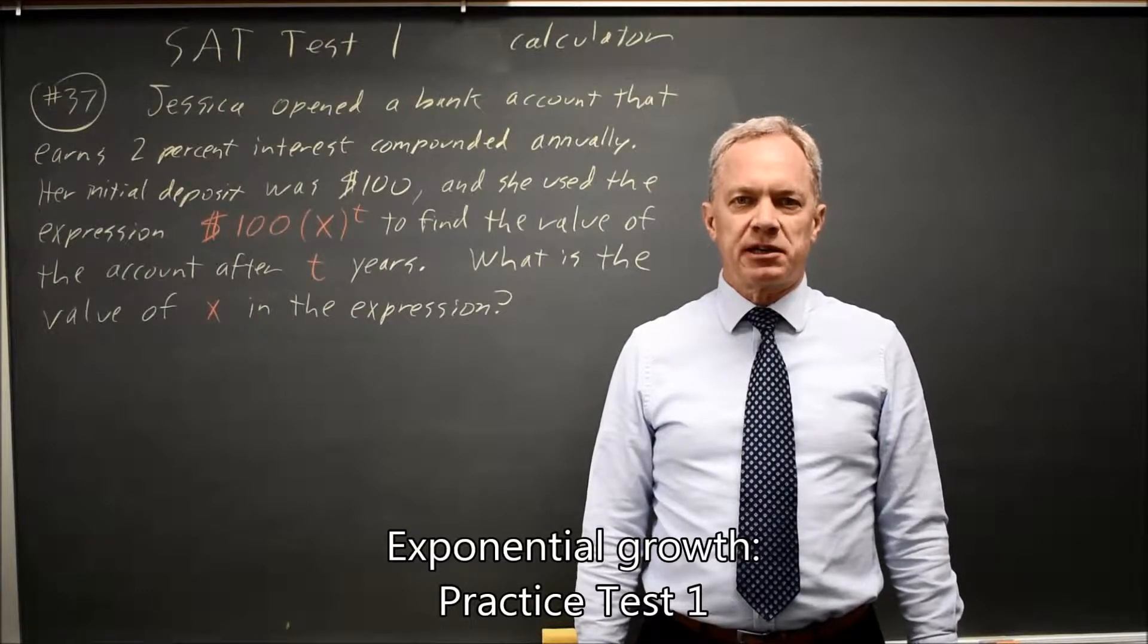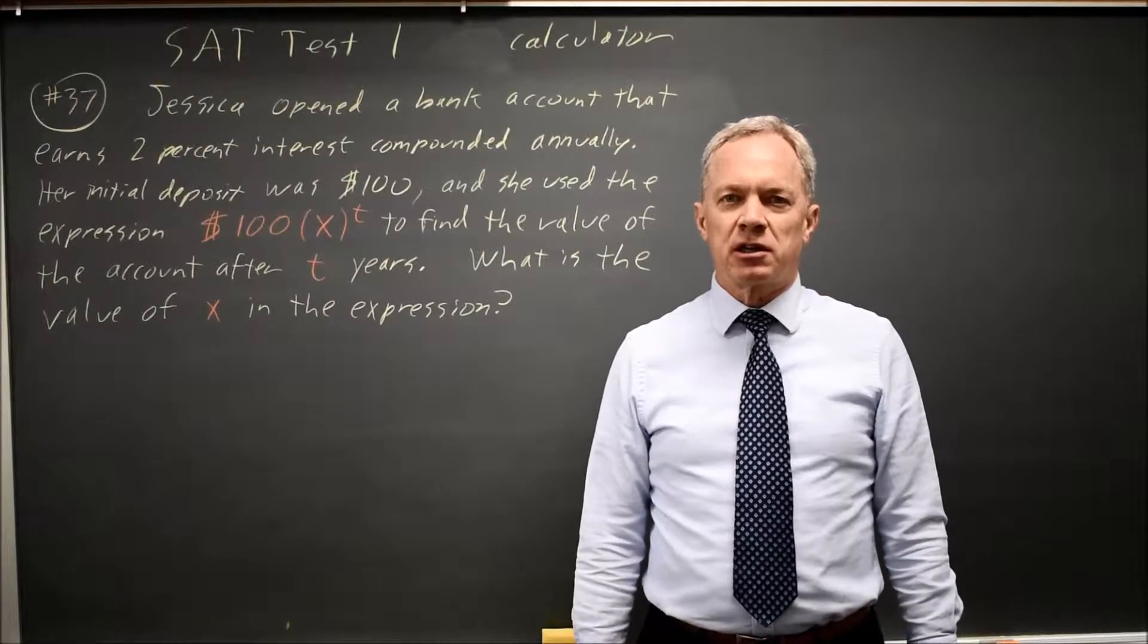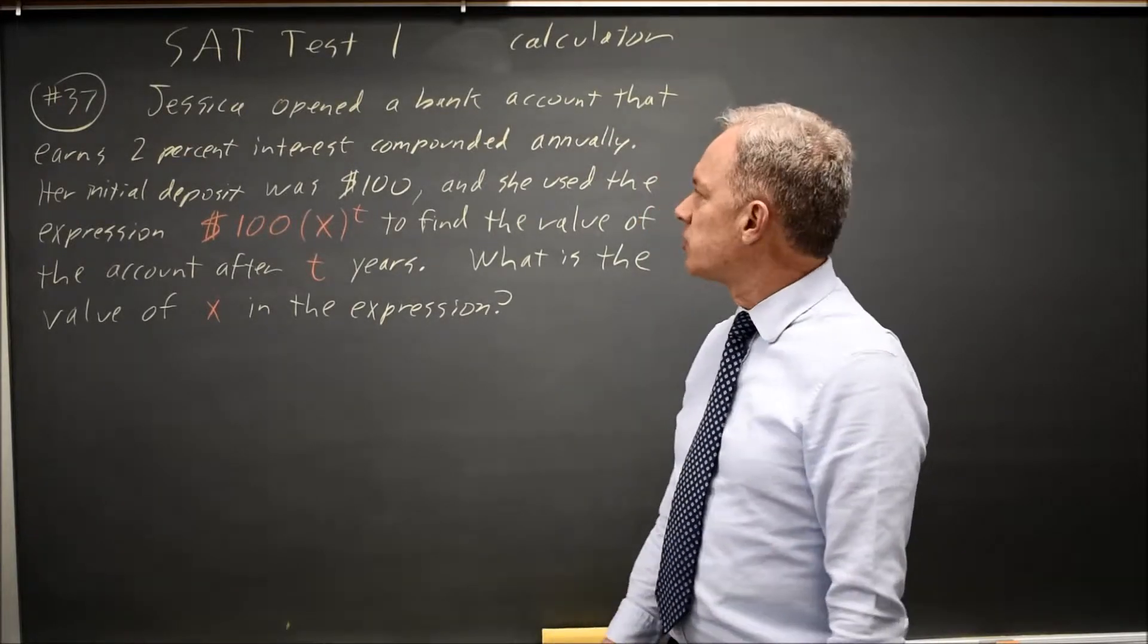This is SAT test 1, calculator question number 37. College Board gives us a word problem regarding annually compounded interest.